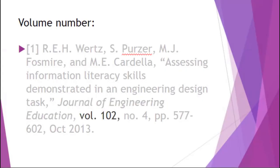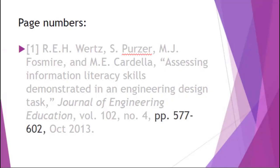Next is the volume number, written as VOL. followed by the number — in this case 102 — with a comma after it. The next part is the issue number, written as NO. followed by the number — in this case 4 — followed by a comma. After that comes the page numbers, written as PP. followed by the range of page numbers — in this case 577–602 — followed by a comma.